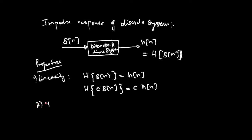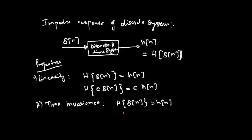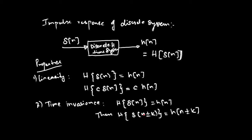The impulse response also satisfies the time invariance property: if the impulse response of delta of n equals h of n, then the impulse response of delta of n minus k will be h of n minus k, where k refers to the time shift. If the input is delayed or advanced by k units and the output is correspondingly delayed or advanced, it is said to be a time invariant system.